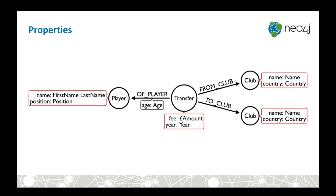We've got nodes and relationships. Next are properties — key-value pairs that we can put on nodes or on relationships, used to represent metadata or attributes. It may be that what starts off as a property eventually becomes a node, and we'll see an example of that. Finally we have labels, which are similar to table names — they're used to group nodes. We can say a node is of label 'player', 'transfer', or 'club', and we use those labels in our queries to look up, for example, a club with a given name.